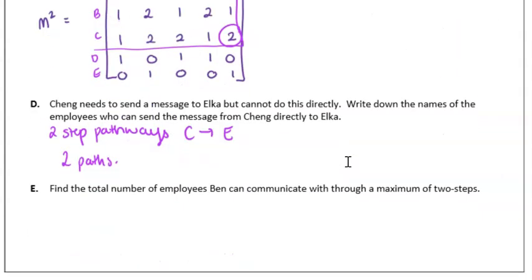We want to make sure that we are writing those down: Cheng to Amara and Cheng to Dana. Who are the employees? Amara and Dana. That's our answer there. You can write down the pathway, but remembering always make sure you're checking the question and what is it they're asking you for, put it back into the context. So using the names Amara and Dana.